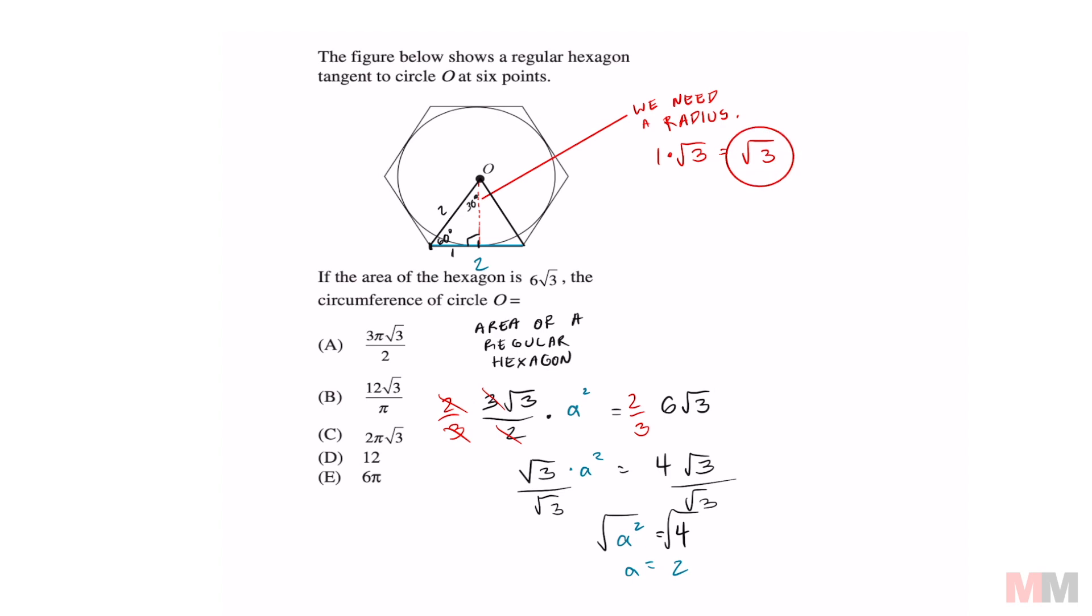We're trying to find the circumference. Circumference is 2πr, and we've got the radius right there. So now we have 2π times √3, which matches letter choice C.